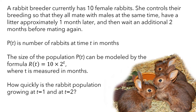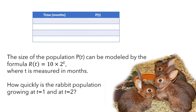We want to know how quickly the rabbit population is growing at t equals 1 month and t equals 2 months. In this scenario, p describes the actual number of rabbits at any given moment in time. So if we translate the scenario into terms of p, this is saying that at the beginning — at 0 months — there are 10 rabbits.